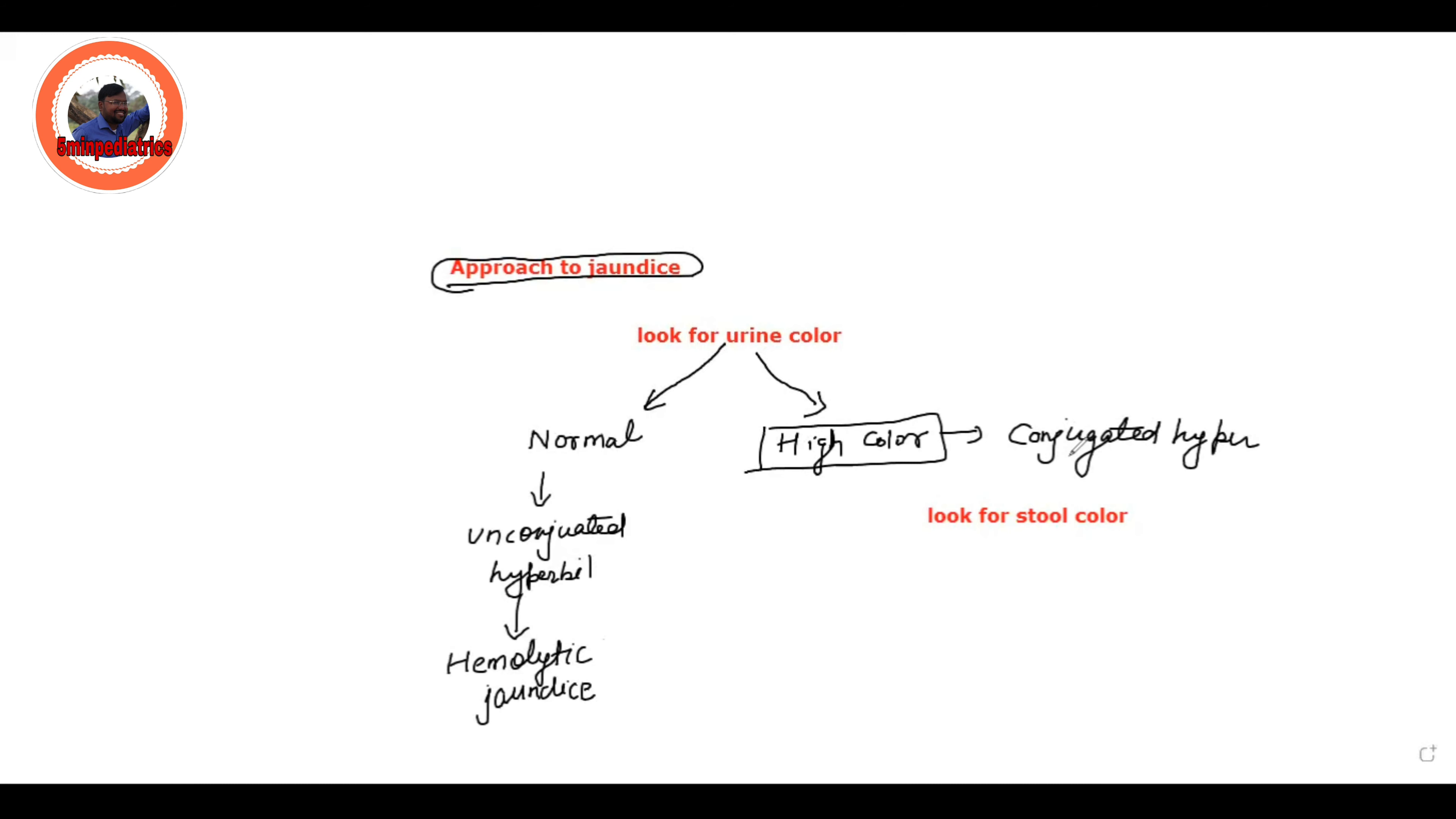In that case, we have to look for the color of the stool. You can ask in the history if the stool color is pale, then we have cholestatic jaundice.